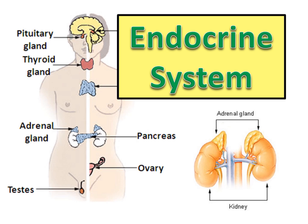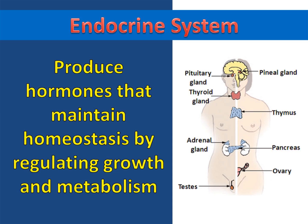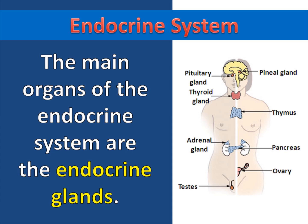The endocrine system. The primary purpose of the endocrine system is to produce hormones that maintain homeostasis by regulating growth and metabolism. The main organs of the endocrine system are the endocrine glands. These glands secrete a wide variety of hormones.